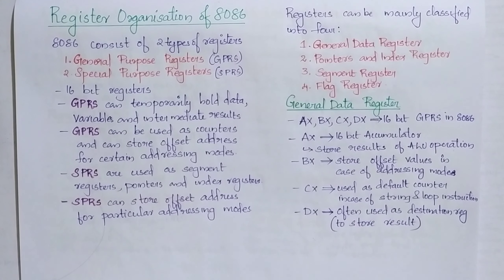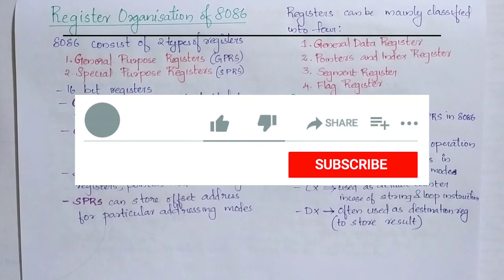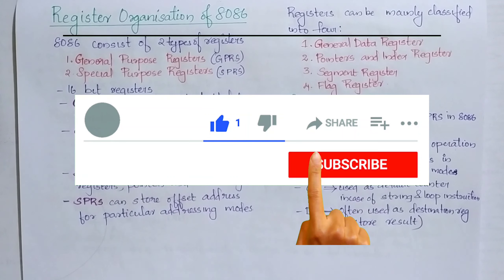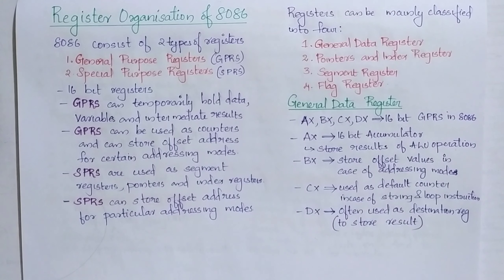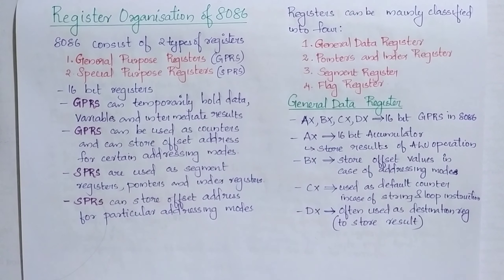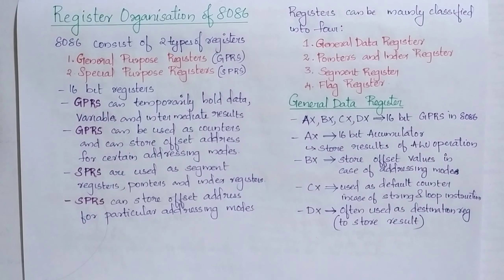Hello guys, welcome to Signal Stick. Today we are going to study about register organization of 8086. First of all, we can check what is a register. A register is a very small amount of fast memory that is built in the CPU in order to speed up the operation. A register is very fast and efficient compared to other memories like RAM, ROM, and external memory.